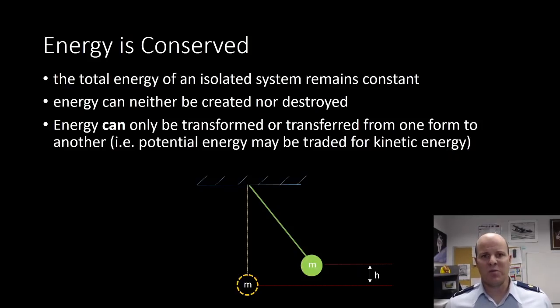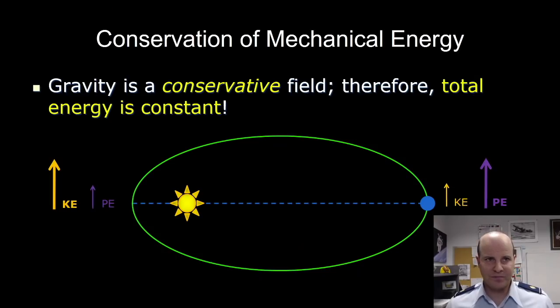Such is the case with a pendulum, where you have essentially our potential energy, where the pendulum is at the top, a rising portion of its arc, traded for kinetic energy, where it's down towards the bottom. You also see this case with gravity. So gravity is a conservative field. Therefore, the total energy is going to be constant.